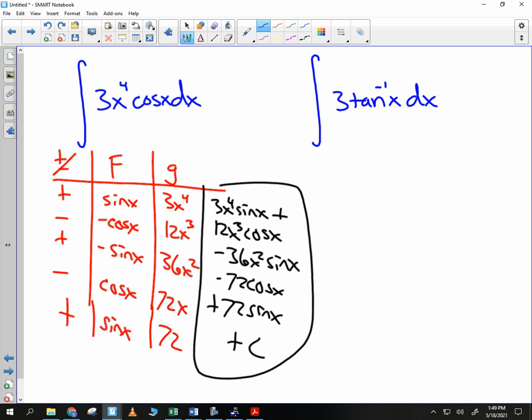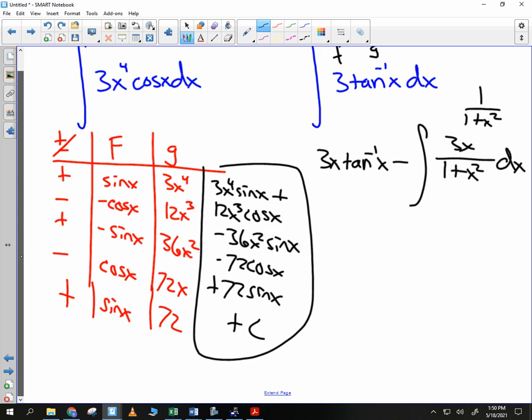Once, twice, thrice. The last one. What is F? What is G? F is 3 and G is arc tan. Because you know the derivative of arc tan. What's the derivative of arc tan? Good. So big F is 3x times arc tan of x. Minus the integral of 3x on top and on the bottom, 1 plus x squared dx. Everybody okay with that set up?